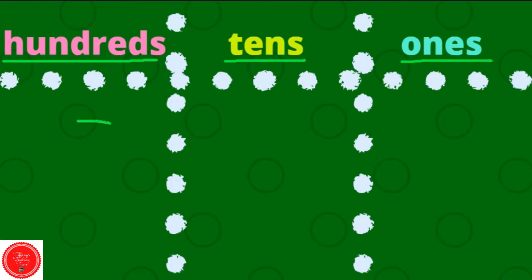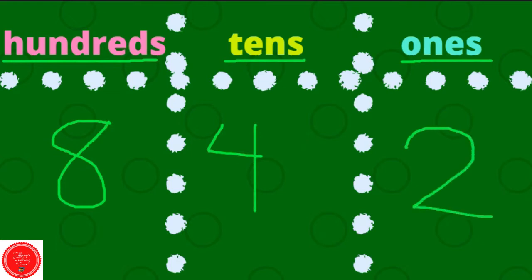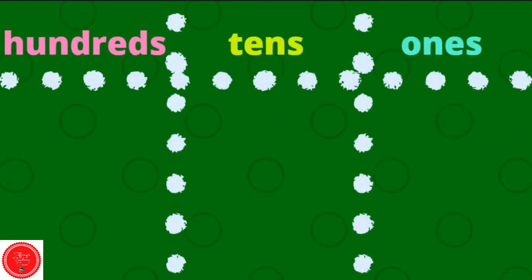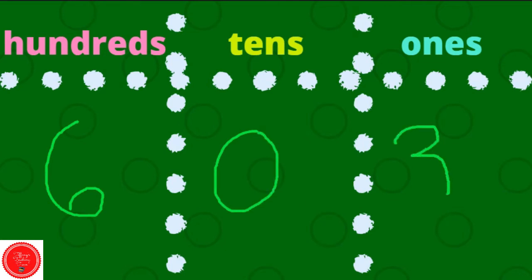So if I have the number 842, there are eight hundreds, four tens, and two ones. If I have the number 603, there are 600, zero tens, and three ones.